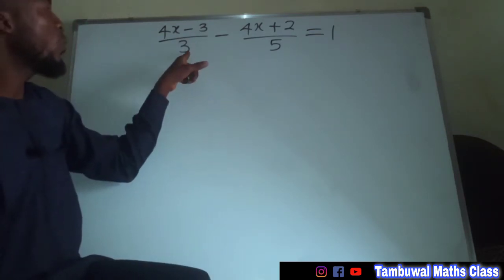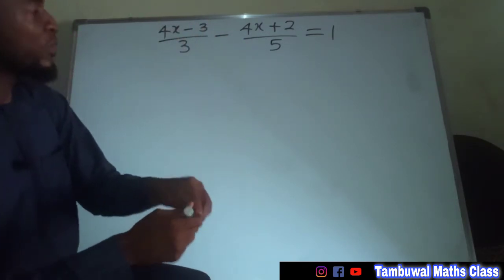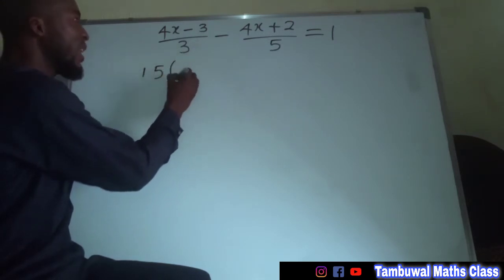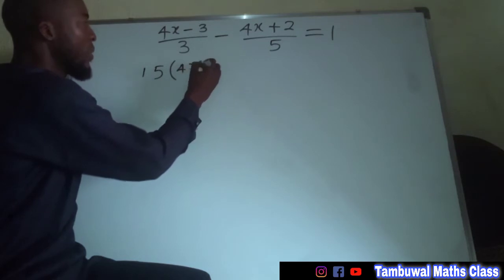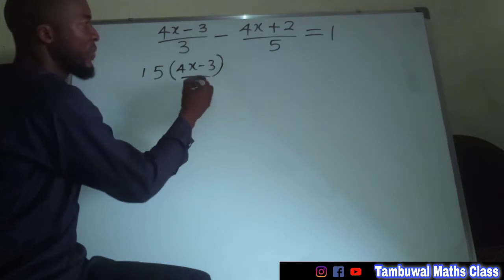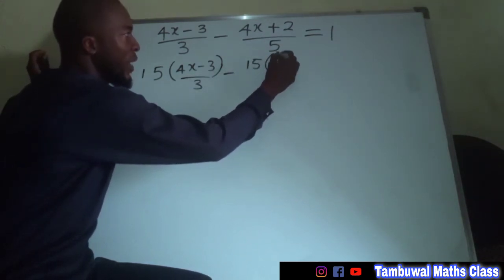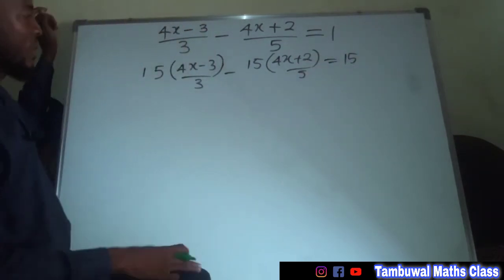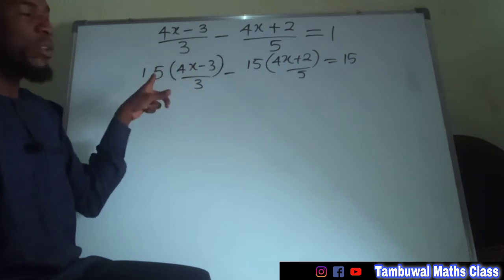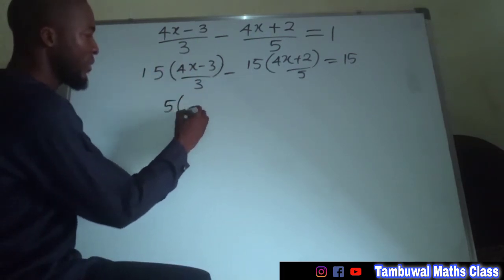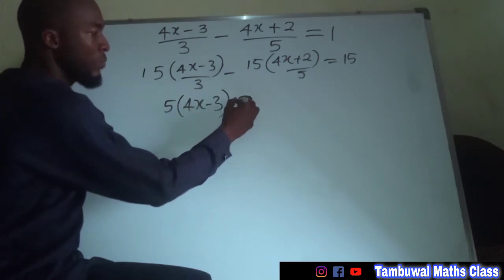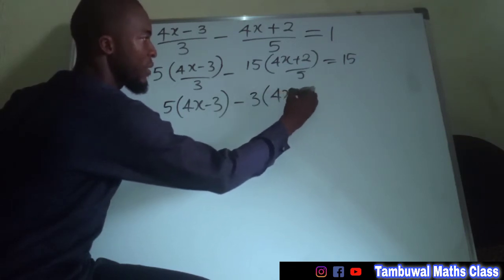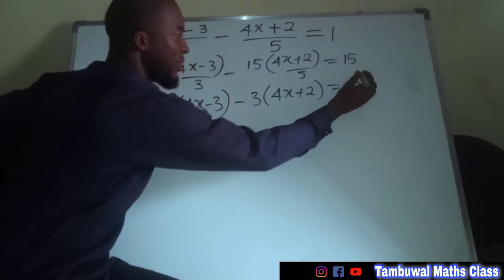Fifteen is the smallest number into which three and five can both go without remainder. So let us now multiply each of these terms by fifteen. Fifteen times the whole expression gives us: fifteen multiplied by (4x minus 3) over 3, minus fifteen multiplied by (4x plus 2) over 5, equals fifteen. Fifteen times one is still fifteen. Three can go into fifteen five times, and five can go into fifteen three times, so we have five times (4x minus 3) minus three times (4x plus 2), and the whole of this equals fifteen.